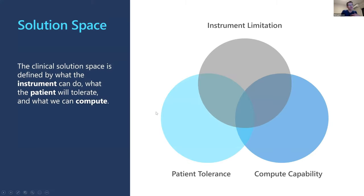One way to think about it — and I'll admit this is a super simplified model — is that when we think about all the great stuff we read in papers in the literature, not all of it is something we can actually apply clinically. What we can deliver to patients, or what I would call the solution space, is limited in this simplified model by three different things: what you can do with your instrument and gradient speed, what the patient is willing to tolerate — how long they can lie still or hold their breath.